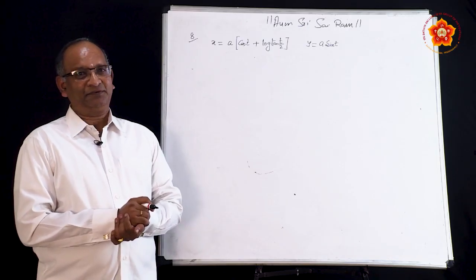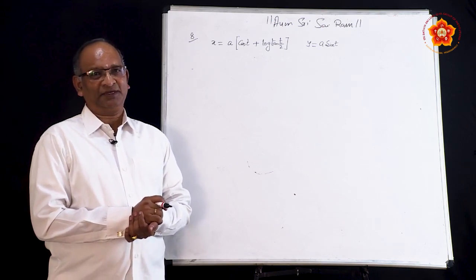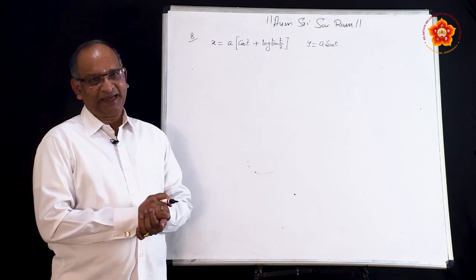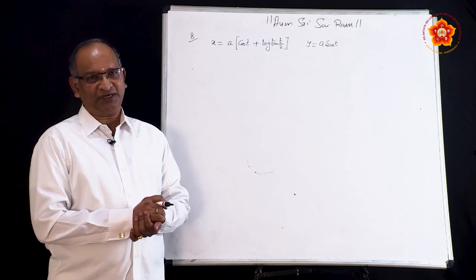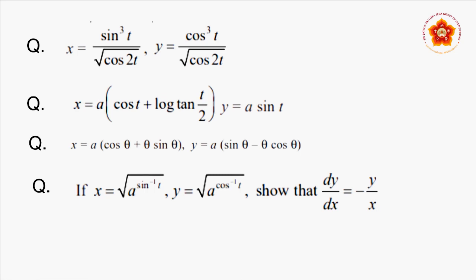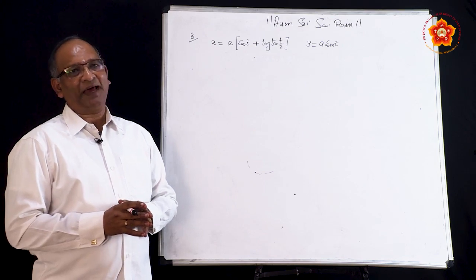Let us continue the exercise problems. The last problem was quite complicated, but this one is not so much, though it also has a function of function. The procedure is the same: x is expressed in terms of t, y is also expressed in terms of t. We can find dy/dt and dx/dt. Since both x and y are expressed in terms of t, t is called the parameter, and the equations are called parametric equations. We are learning how to find derivatives of parametric equations.